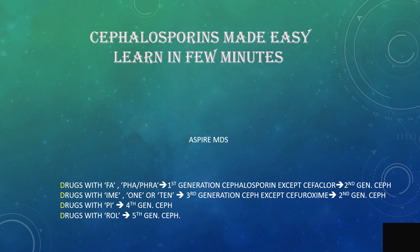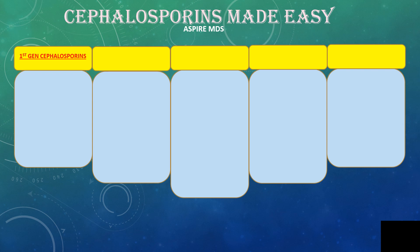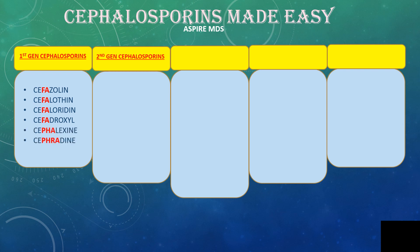Now let's see how this works with the actual drugs. First generation Cephalosporins contain FA, PHA, or PHRA. Drugs in this group include Cephaloridin, Cephalexin, Cephalothin, Cephazolin, and Cephaloridine. These are all first generation Cephalosporins.